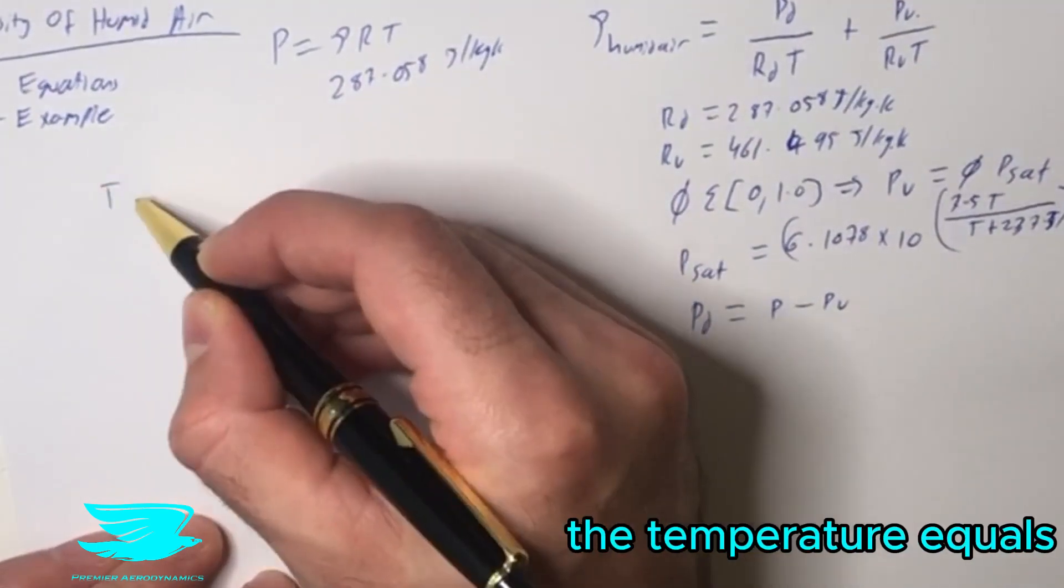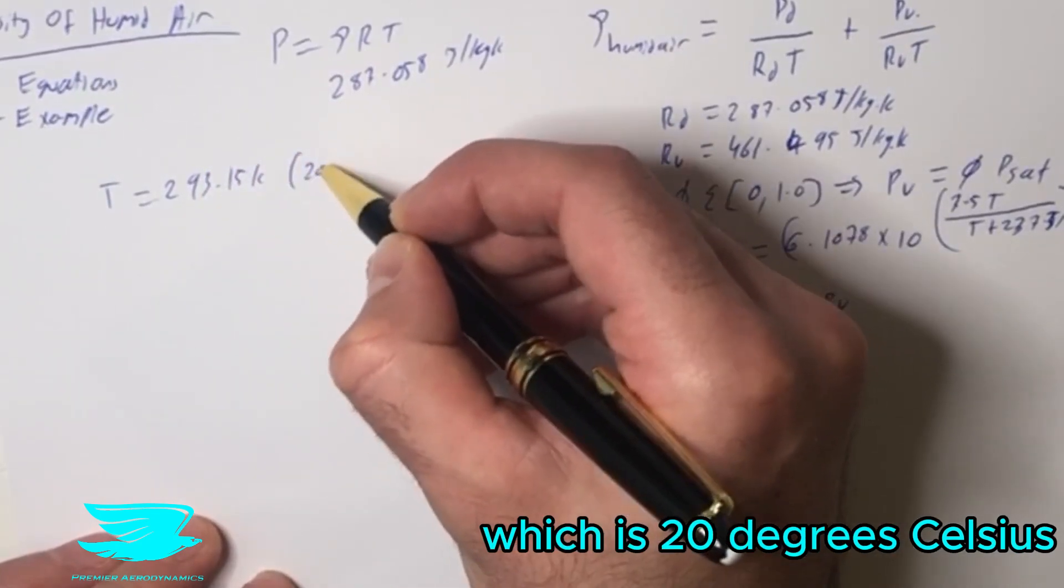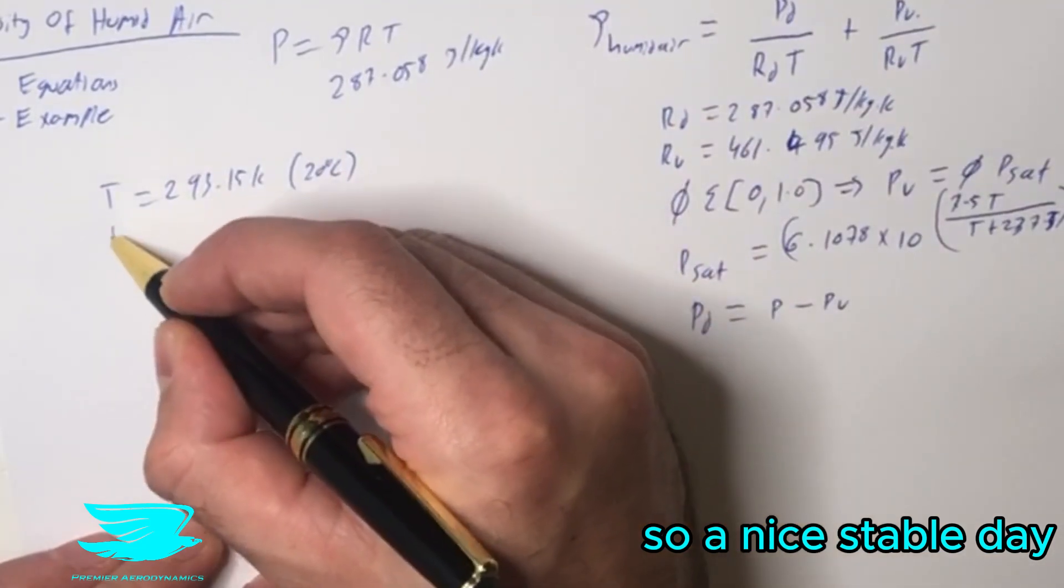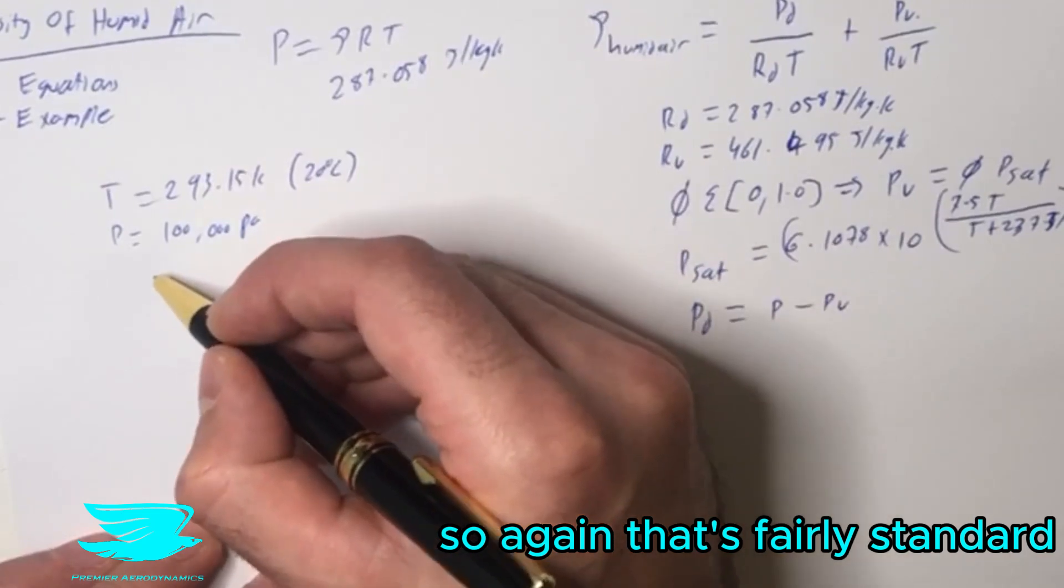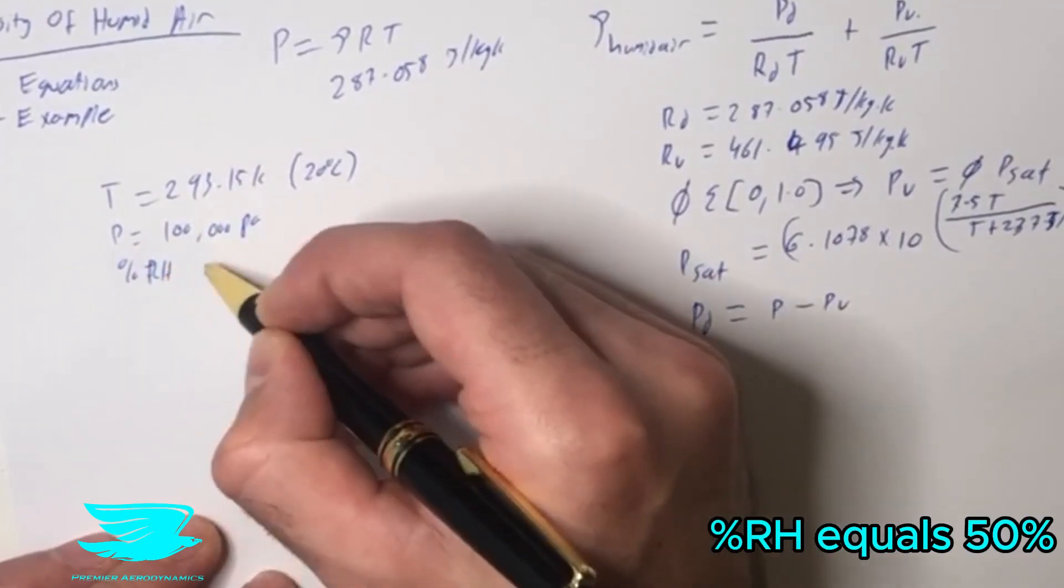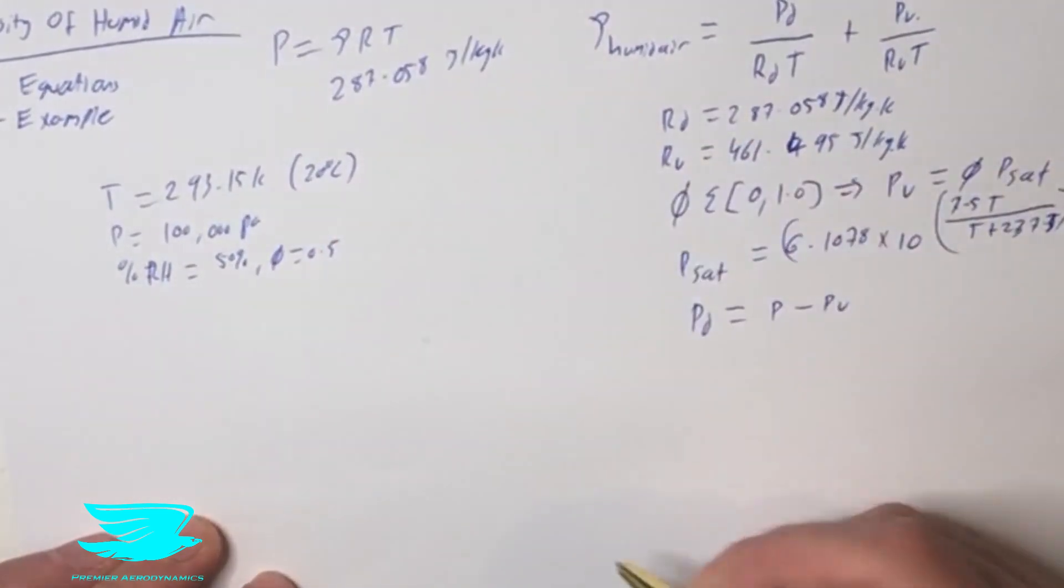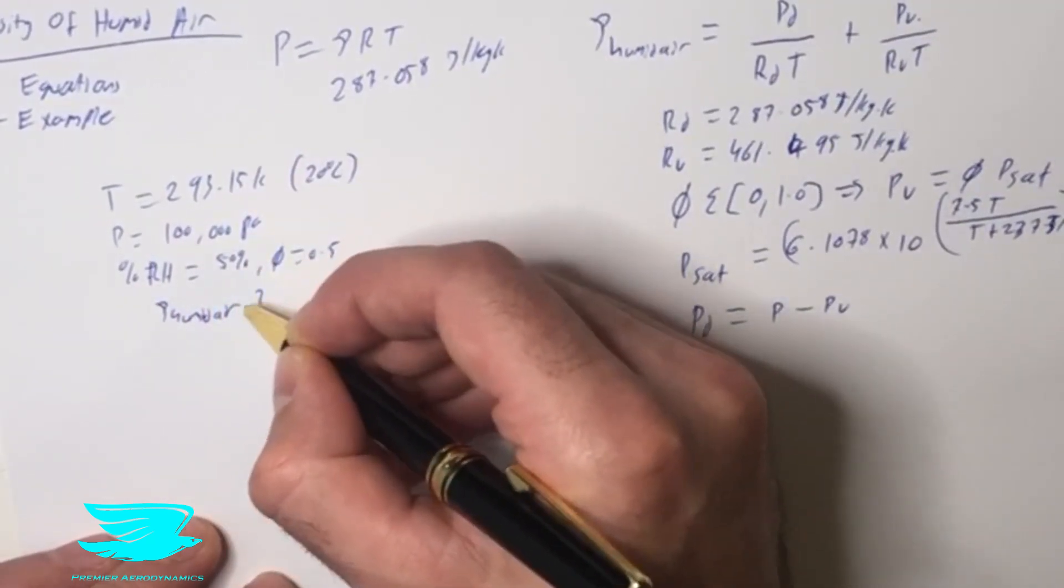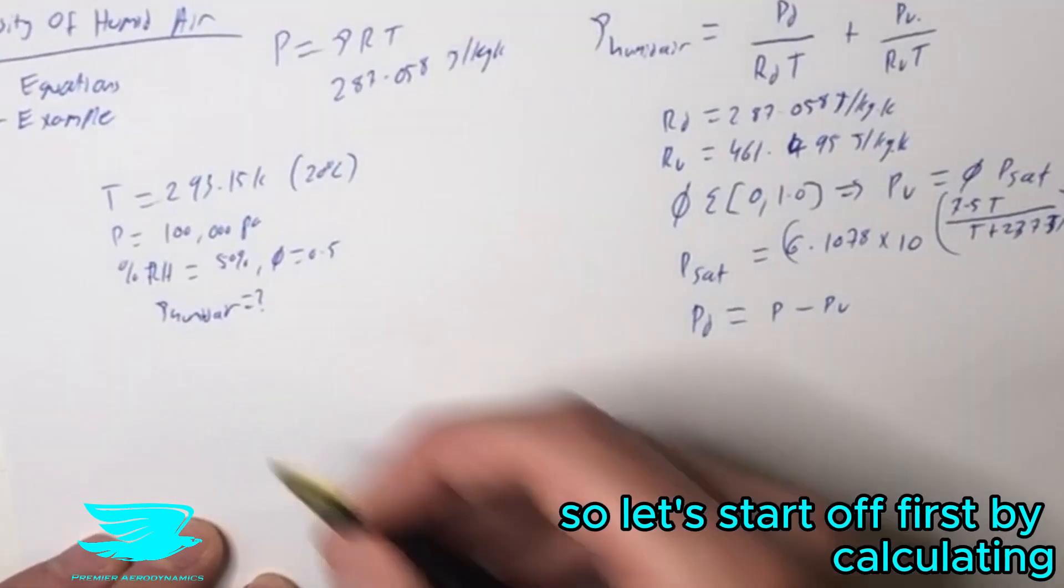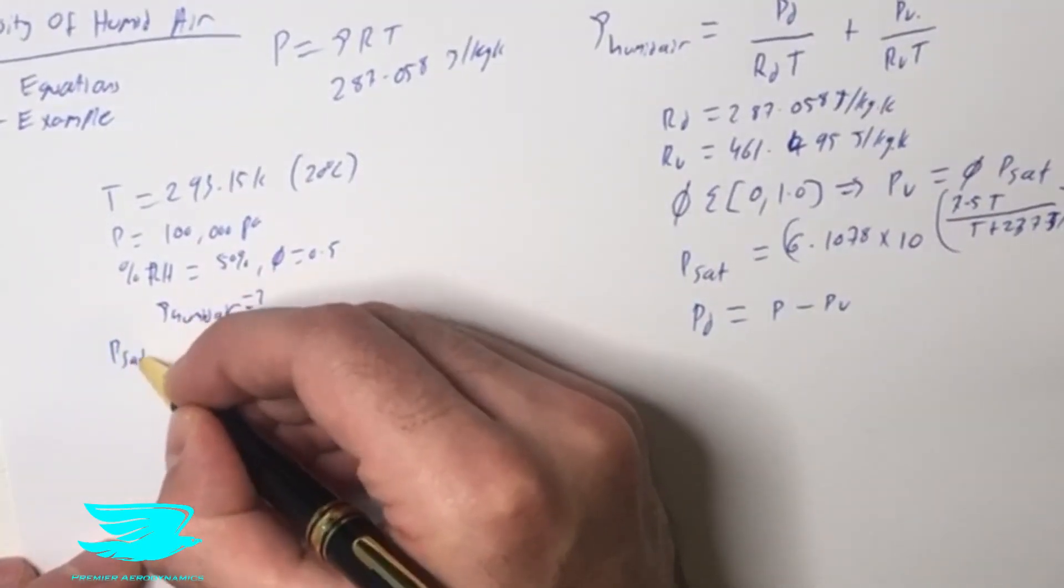Let's say on a regular day, the temperature equals 293.15 Kelvin, which is 20 degrees Celsius. The pressure equals 100,000 Pascals. The percent humidity, RH, equals 50%. So that means that phi equals 0.5. What is the density of the humid air? Let's start off first by calculating the saturation pressure if the entire air had 100% humidity.